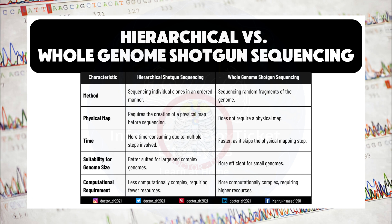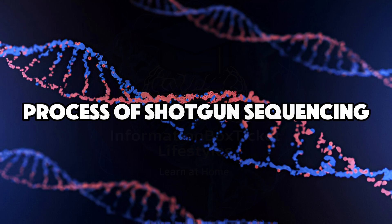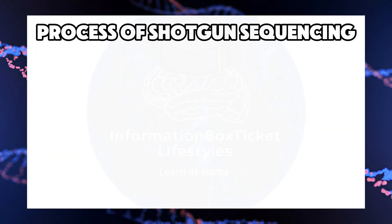Regarding computational requirements, hierarchical shotgun sequencing is less computationally complex, requiring fewer resources. In contrast, whole-genome shotgun sequencing is more computationally complex, demanding higher computational resources. The process of shotgun sequencing is divided into the following seven steps.